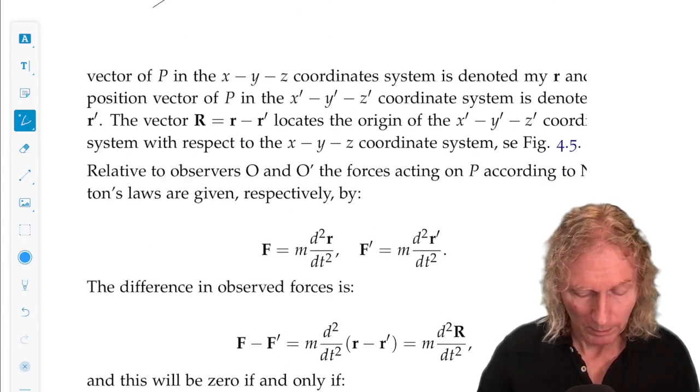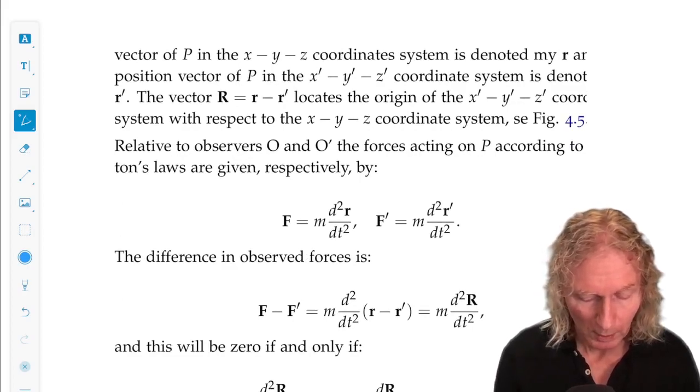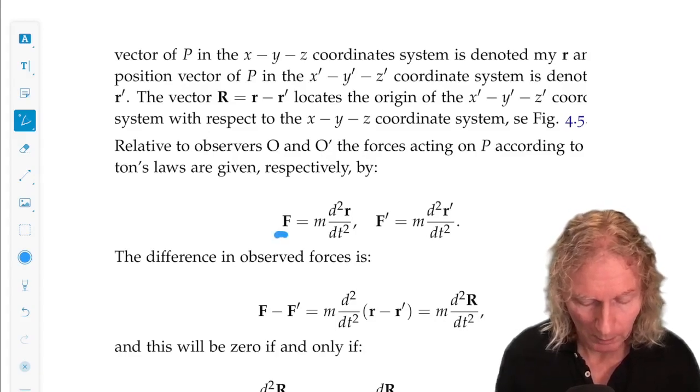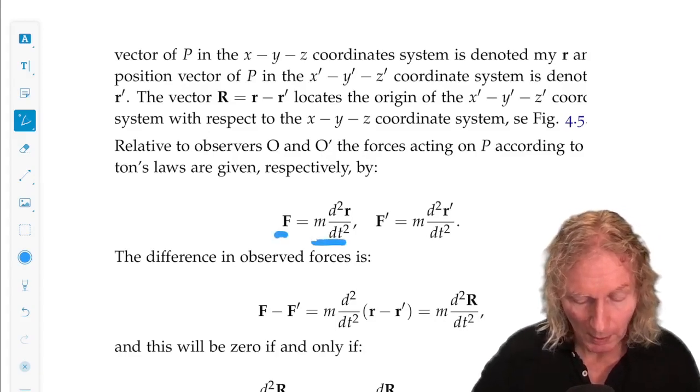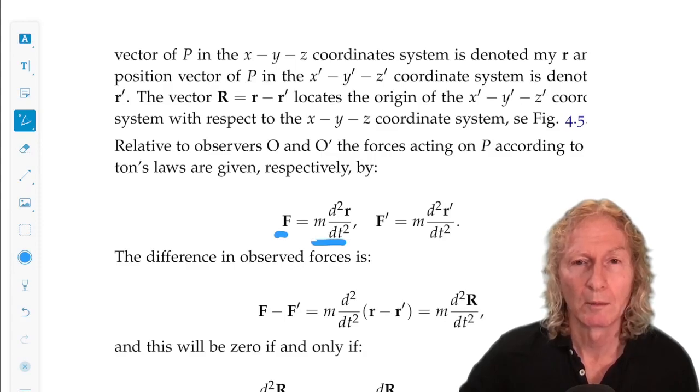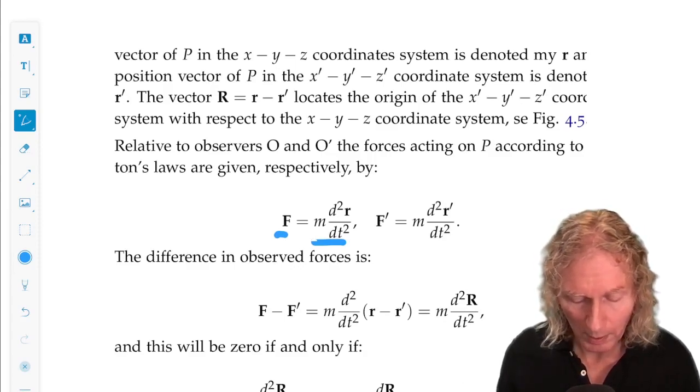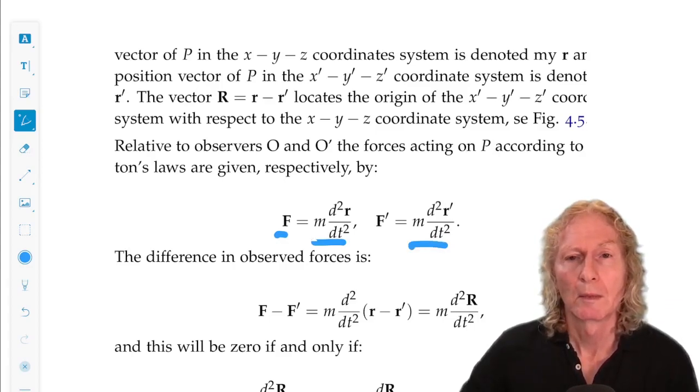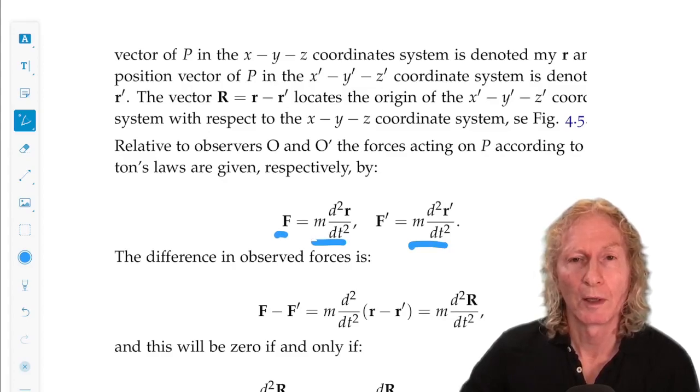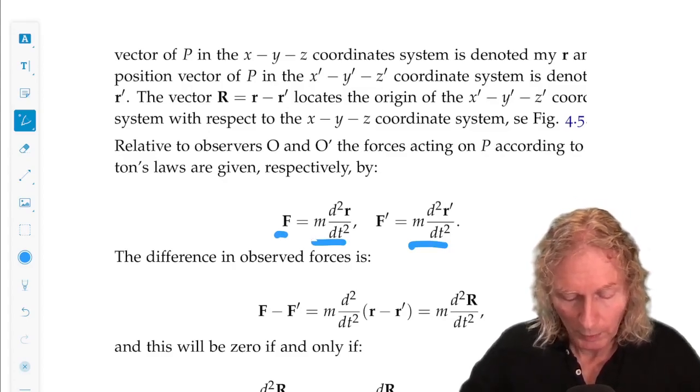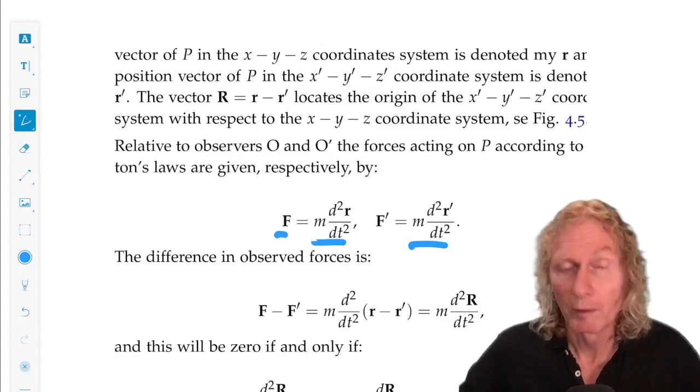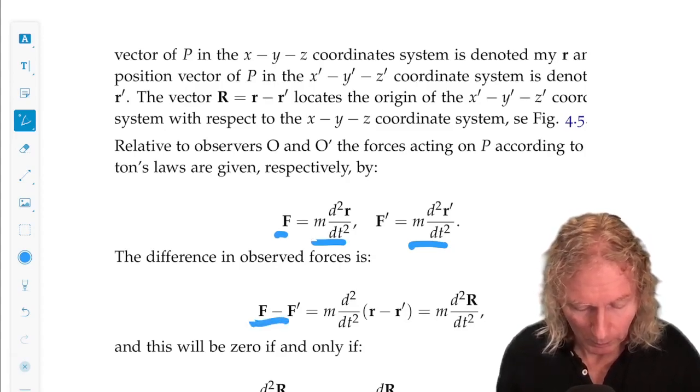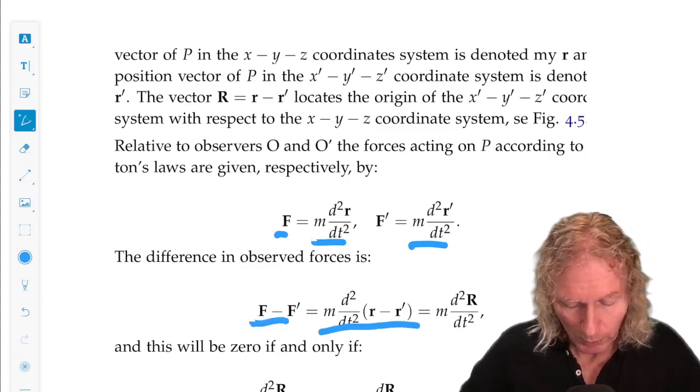Alright, now, observer O observes the point P moving, so there must be a force acting on it, and it's M second derivative of R with respect to T. And similarly, O prime observes the particle moving, and they can compute the force F prime by the same procedure, M second derivative of R prime with respect to T twice. So the difference in the forces we can easily compute here.